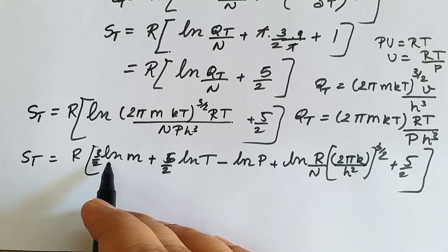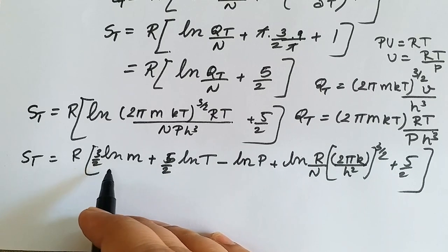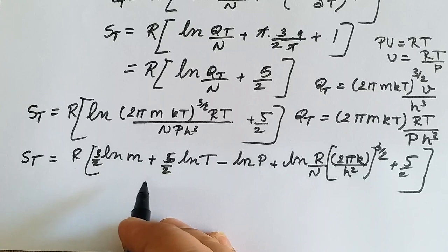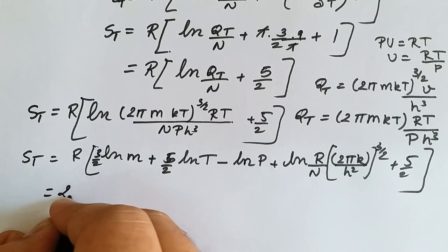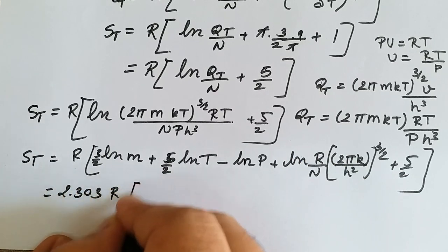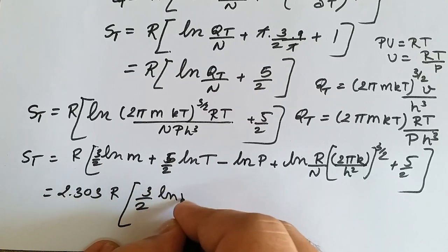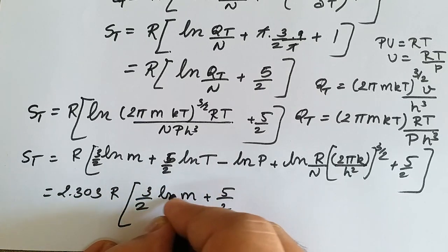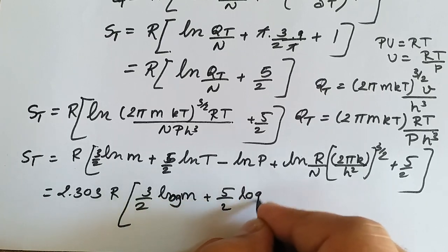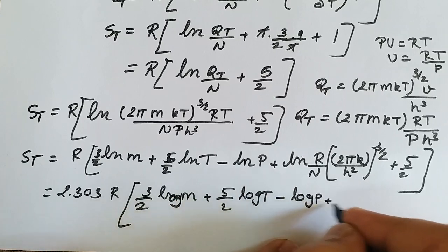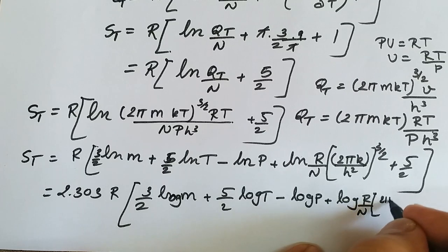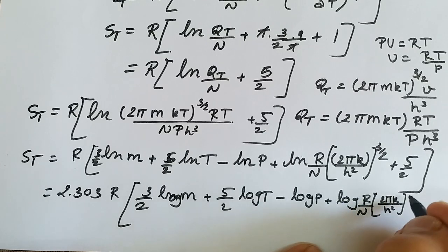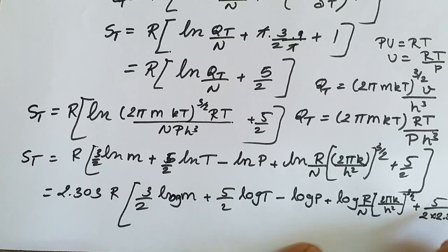Converting ln to log base 10, all terms are multiplied by 2.303 and taken as a common factor, giving: S_t = 2.303R [(3/2) log m + (5/2) log T − log P + log(R/N × (2πk/h²)^(3/2)) + 5/2].